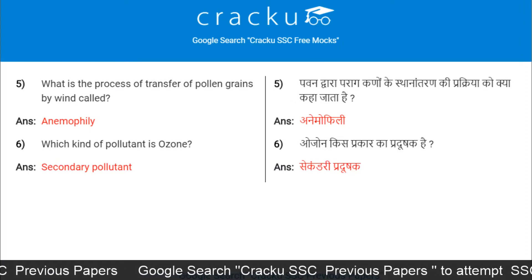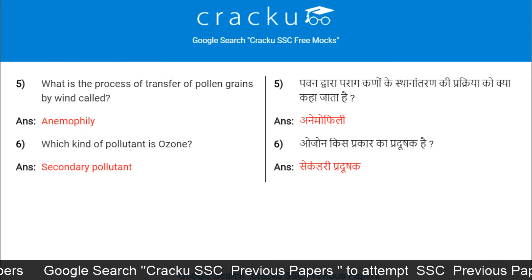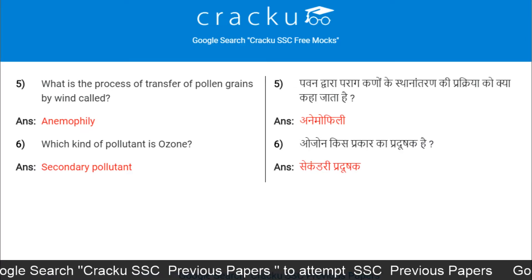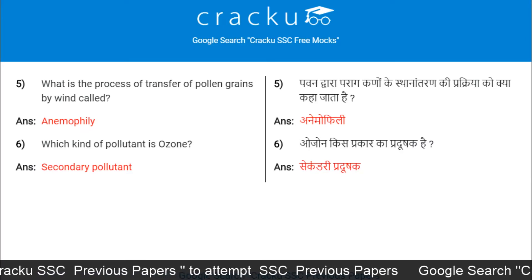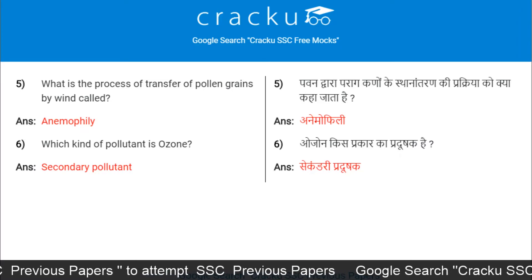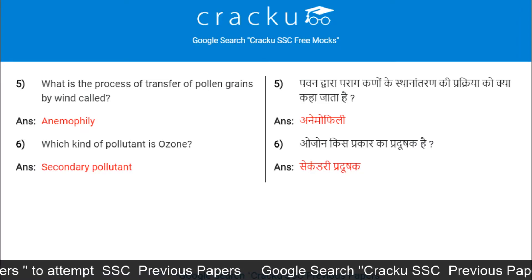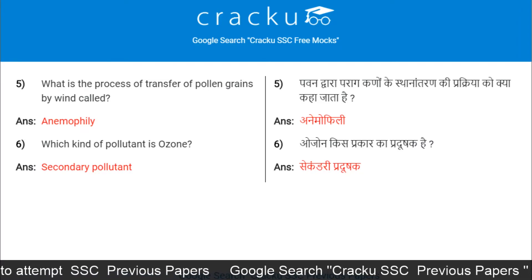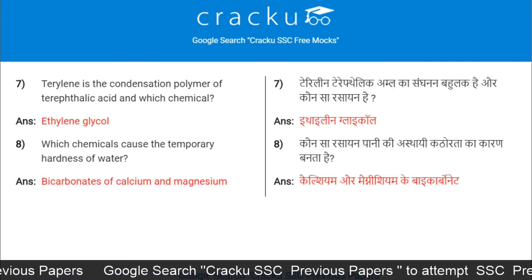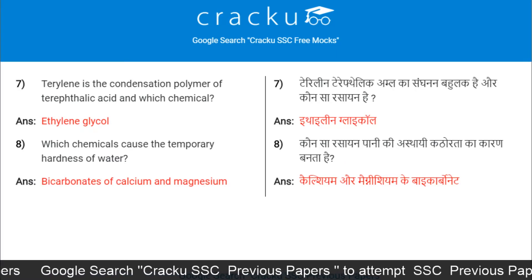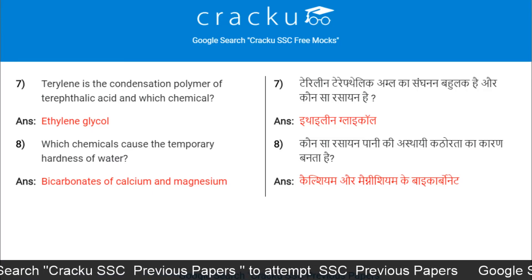What is the process of transfer of pollen grains by wind called? Anemophily. Which kind of pollutant is ozone? A secondary pollutant.